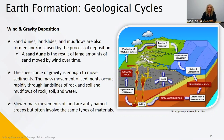A good example is sand dunes, formed as large amounts of sand are moved by wind over time. The force of gravity is also enough to move sediments — mass movement occurs rapidly through landslides of rock and soil, and mud flows of rock, soil, and water. Slower mass movements of land are aptly named creeps, but often involve the same types of materials.